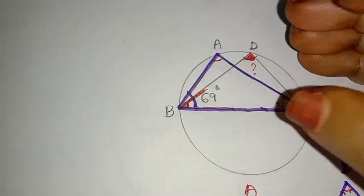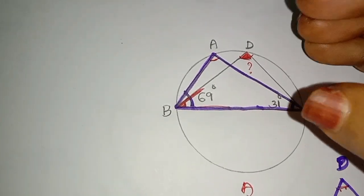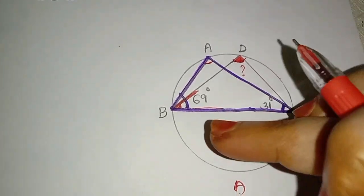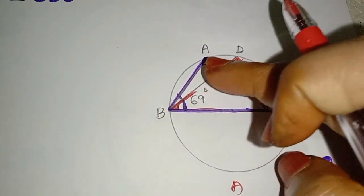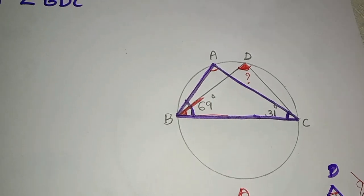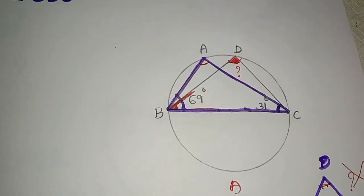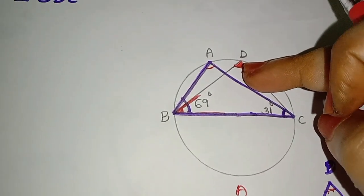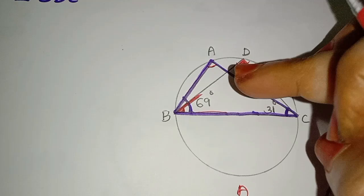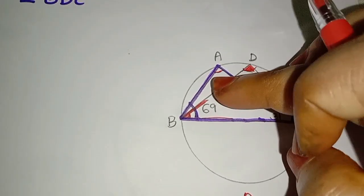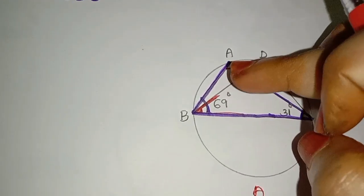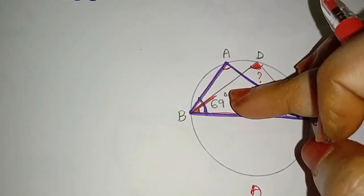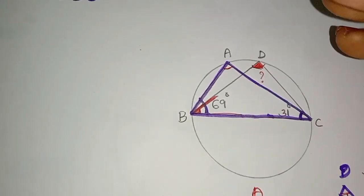That is one property: angles in the same segment are equal. That is one segment. The angles in the value are equal. That means angle A is equal to angle D, because the angles in the same segment are equal.